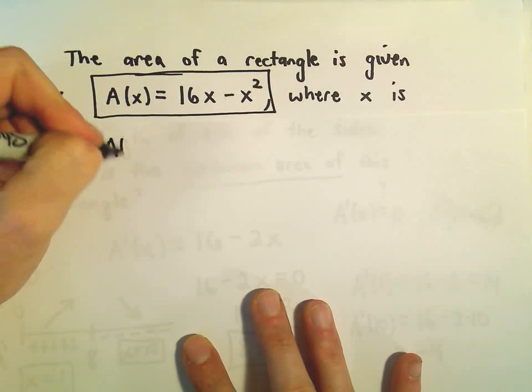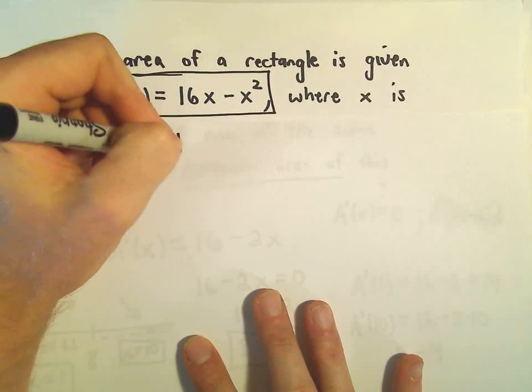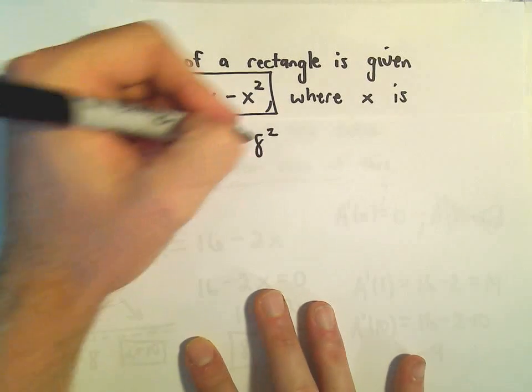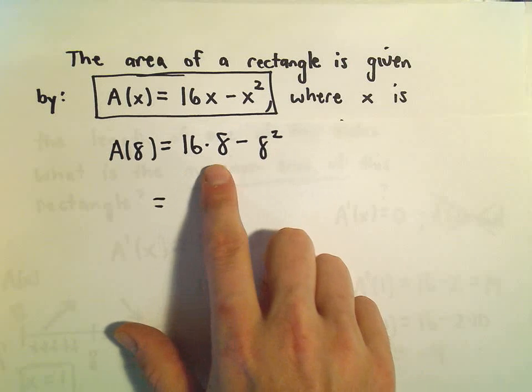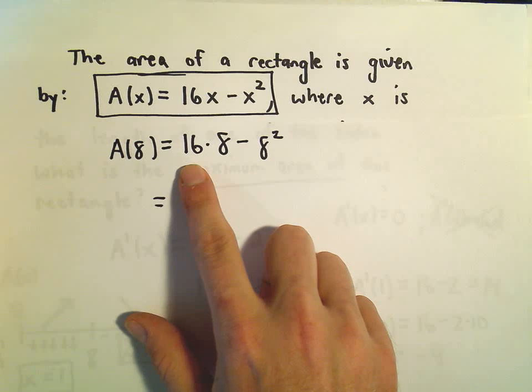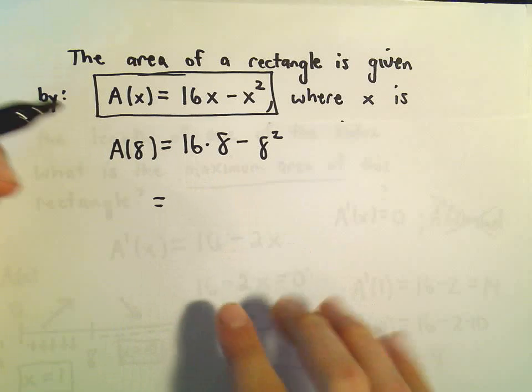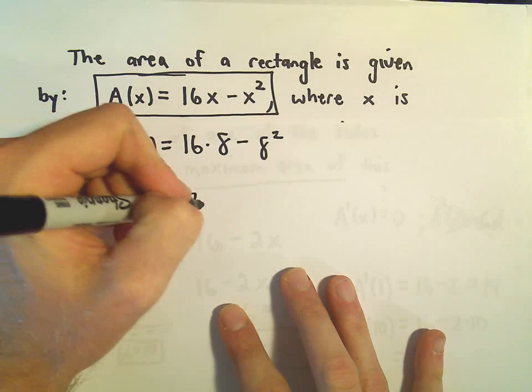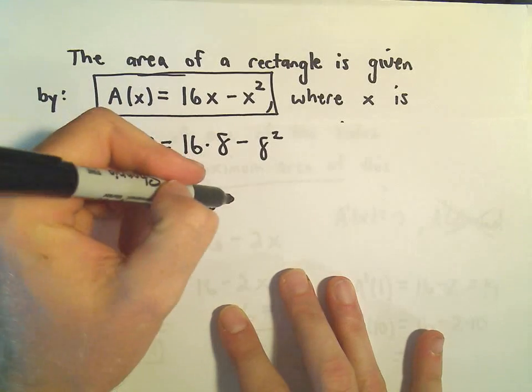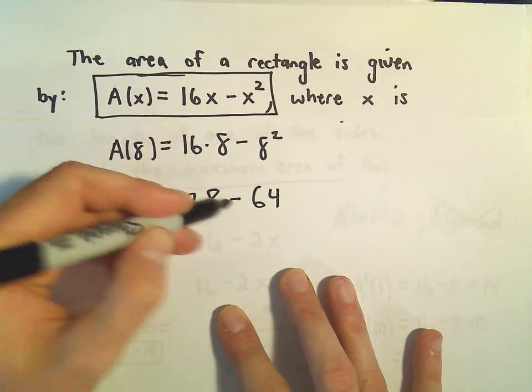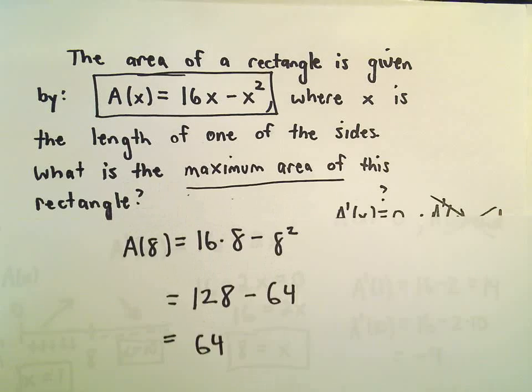So it says the area, when we plug in 8, that's going to be 16 times 8 minus 8². What's 16 times 8? I guess 8 times 10 is 80. 8 times 6 is 48. So 80 and 48 will be 128. And then 8² will be 64. So 128 - 64 will give us 64.